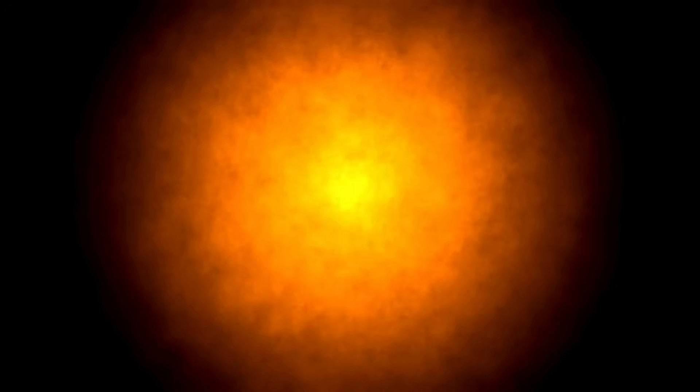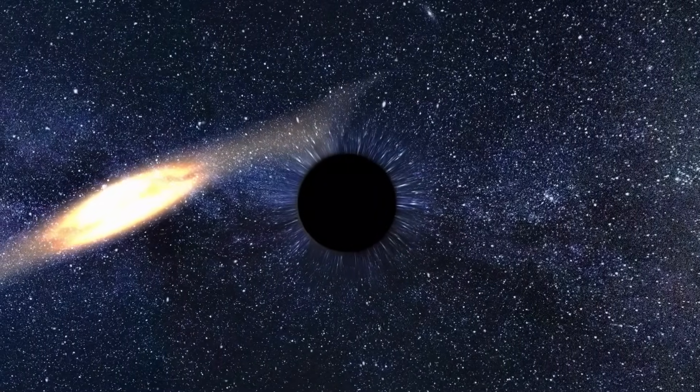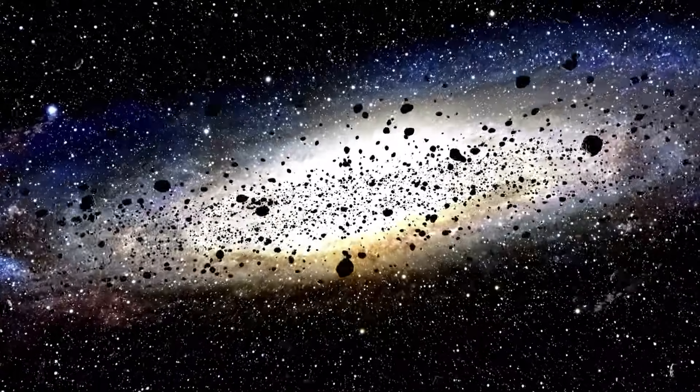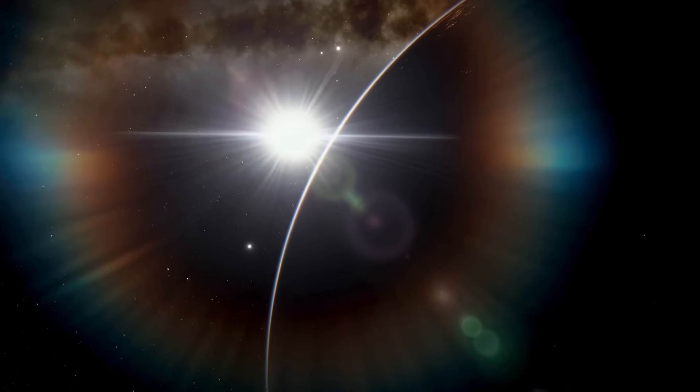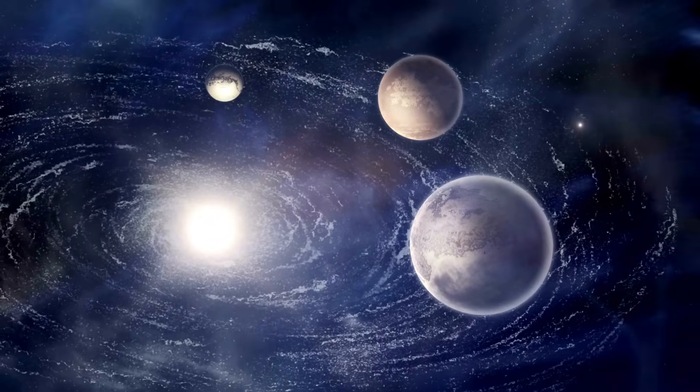Betelgeuse, a colossal red supergiant located in the Orion constellation, has fascinated humanity for centuries with its intense crimson radiance and enormous size. Astronomers have estimated that if Betelgeuse were to be positioned at the center of our solar system, it would consume all the planets up to Jupiter.